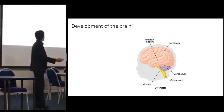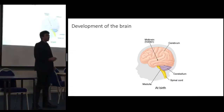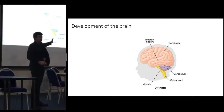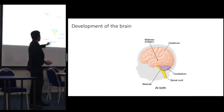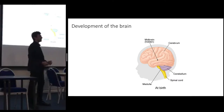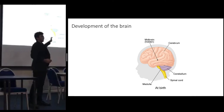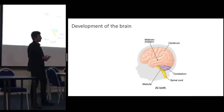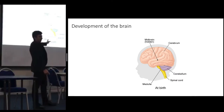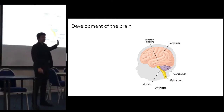Let's begin with a very quick and oversimplified recap of the brain. You can see the cerebrum in pink, which makes you yourself; the cerebellum in purple, which coordinates movement and balance; and the spinal cord and medulla in yellow, which control your vital functions like heartbeat and temperature.